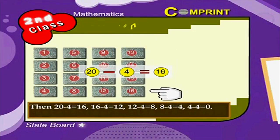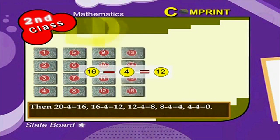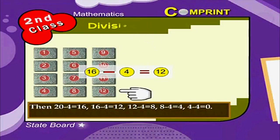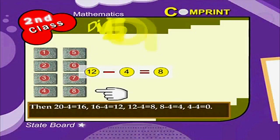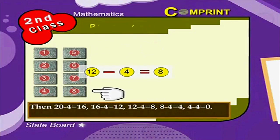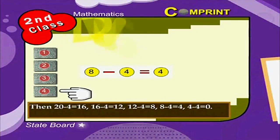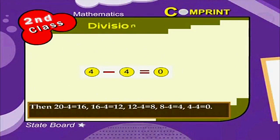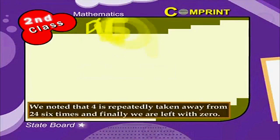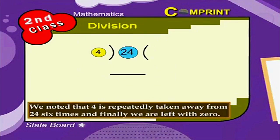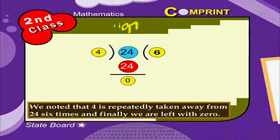16 minus 4 is equal to 12. 12 minus 4 is equal to 8. 8 minus 4 is equal to 4. 4 minus 4 is equal to 0. We noted that 4 is repeatedly taken away from 24 6 times. And finally, we are left with 0.